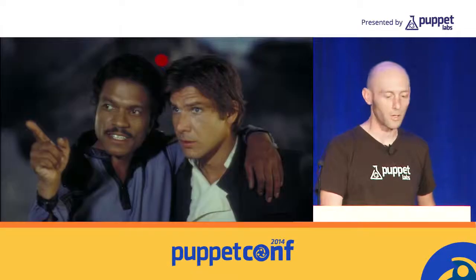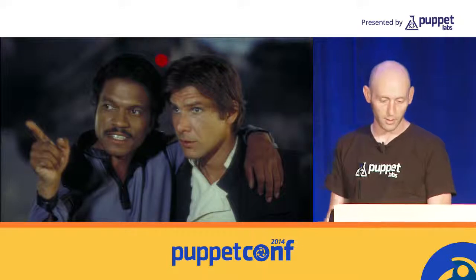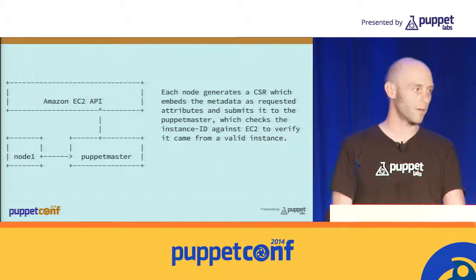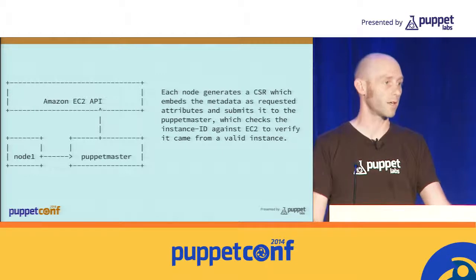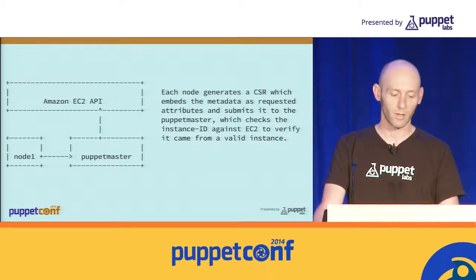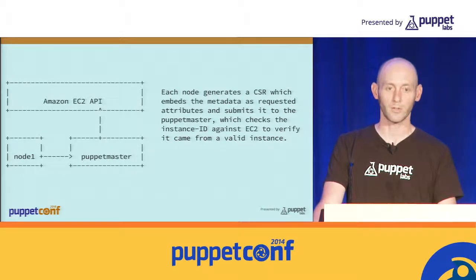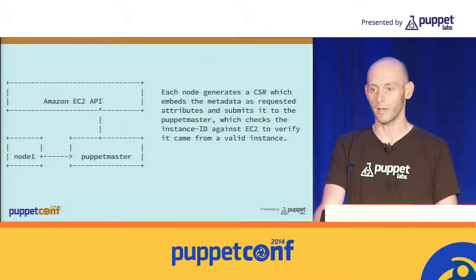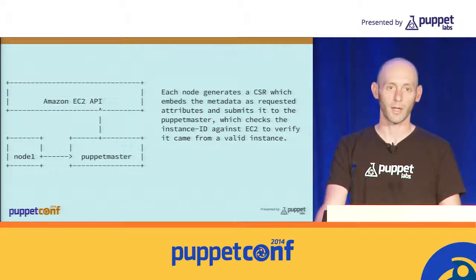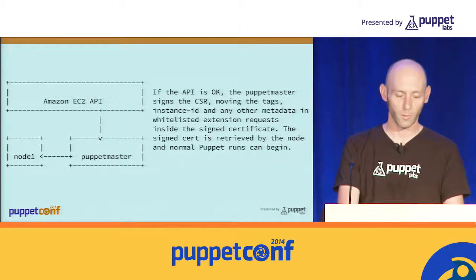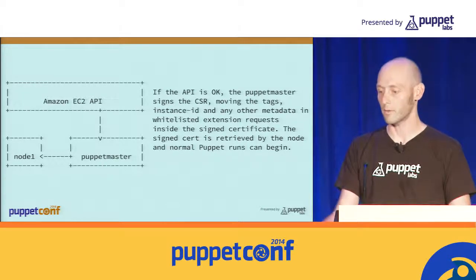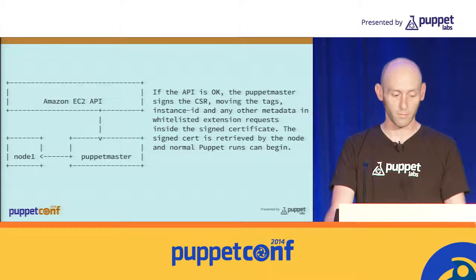Once this happens, Puppet starts up. Puppet generates the CSR as soon as it sees it's starting without a certificate, embeds the metadata from that YAML file into the certificate signing request, and sends it to the master. The master receives the request and checks against EC2 to verify it came from a valid instance — a script queries the API and asks if there's a real instance under my account with that instance ID. If so, the Puppet master signs the CSR, moves the tags, instance ID, and other metadata from the extension request into the signed certificate, and the node retrieves it and normal Puppet runs begin.